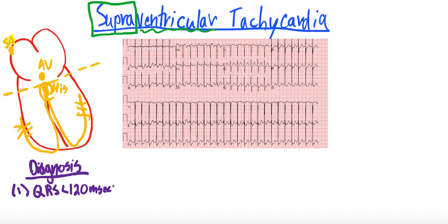Now there is a caveat to this. If a person has a bundle branch block at baseline, they could be in a supraventricular tachycardia without a narrow QRS because they already have that bundle branch block. I can link to bundle branch blocks on EKGs in the top right corner as well. But if someone does not have a bundle branch block at baseline, then a supraventricular tachycardia arising above the level of the bundle of His is going to have a narrow QRS.